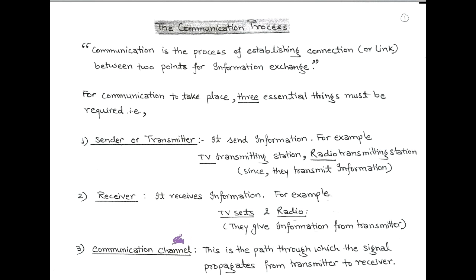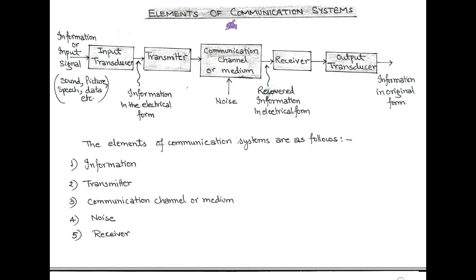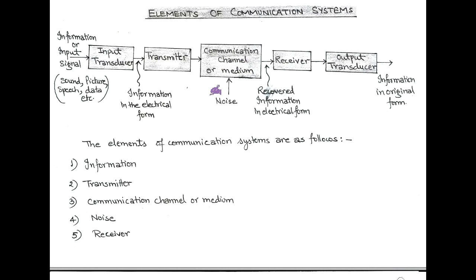So for any information exchange we require three things: transmitter, receiver, and between transmitter and receiver there must be a channel. Next topic is elements of a communication system. In our day-to-day life we have information in the form of sound, picture, speech, data, etc. To send this type of information over a long distance, we first convert the information into electrical form with the help of an input transducer. After converting to electrical form, it is passed to the transmitter. The transmitter is an electronic circuit in which there is a modulation process.